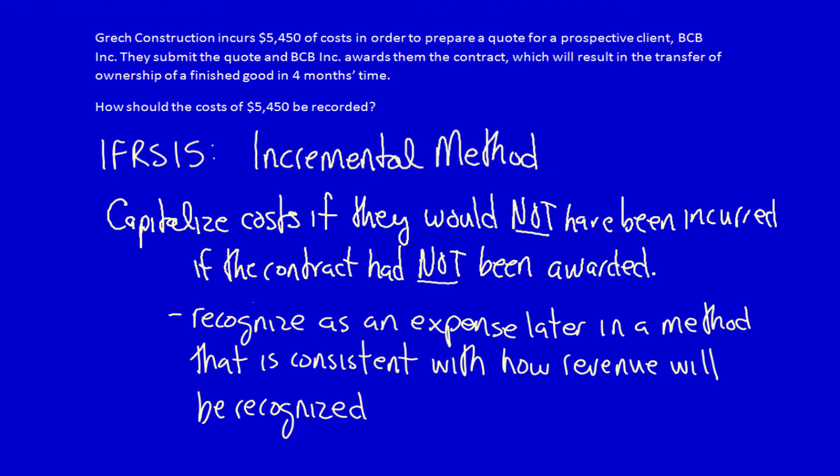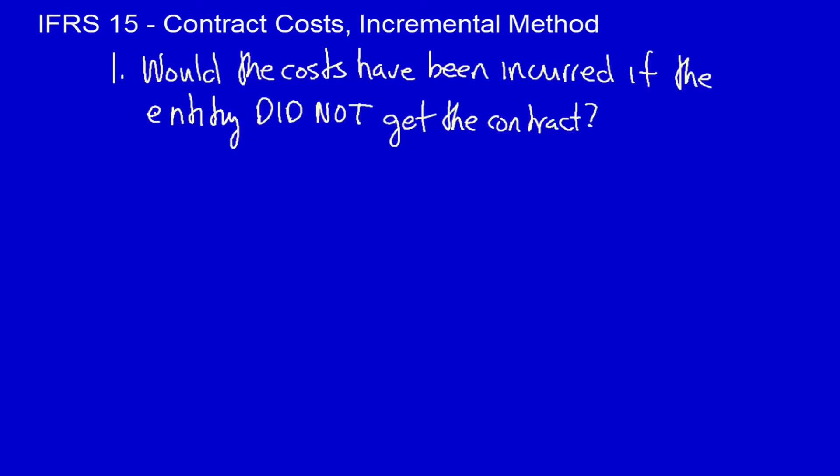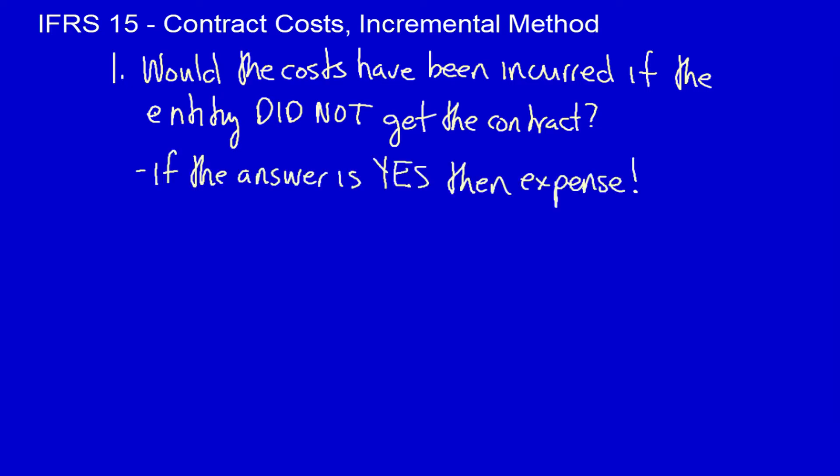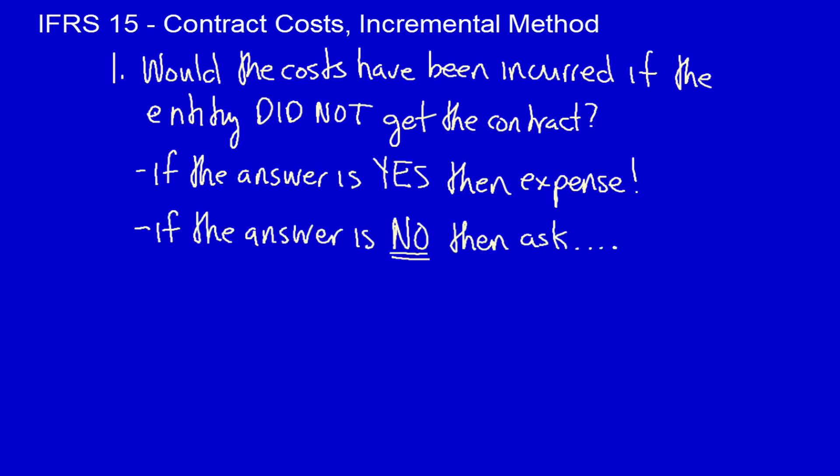I just used a double negative, so let's clarify this quickly. You have to ask yourself the following question: Would the costs have been incurred if the entity did not get the contract? The incremental method says any costs that would have happened whether we received the contract or did not receive the contract must be expensed. But if the answer is no — these costs have only been incurred because we got the contract — then we have to ask ourselves a second question.